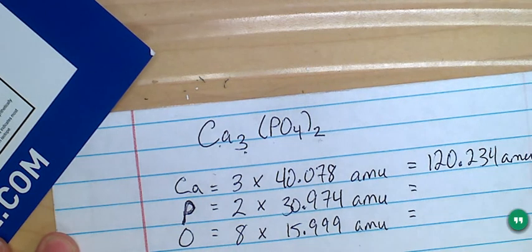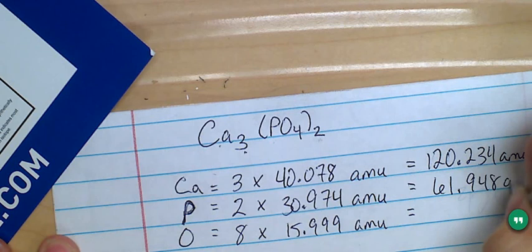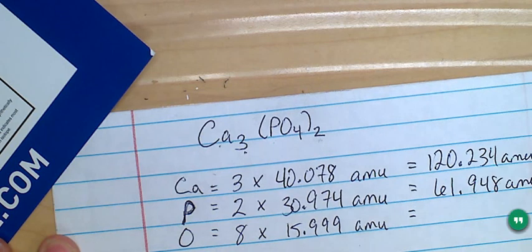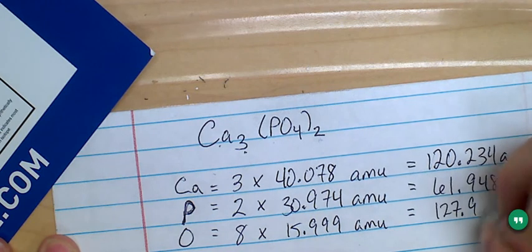Phosphorus is 2 times 30.974 is 61.948 AMUs. And the oxygen is going to be 8 times 15.999 is 127.992 AMUs.